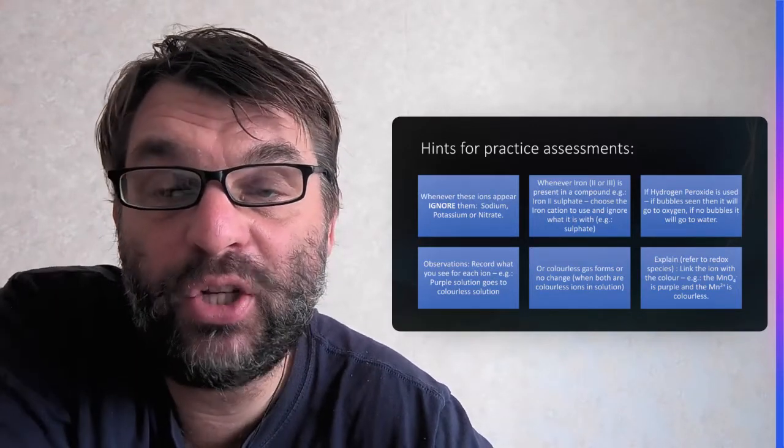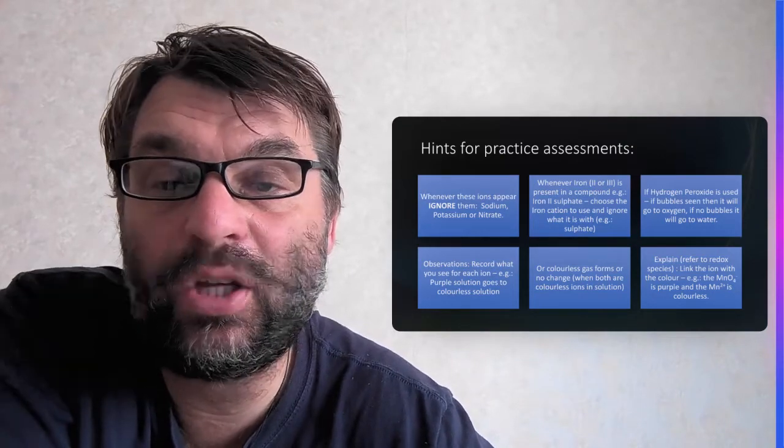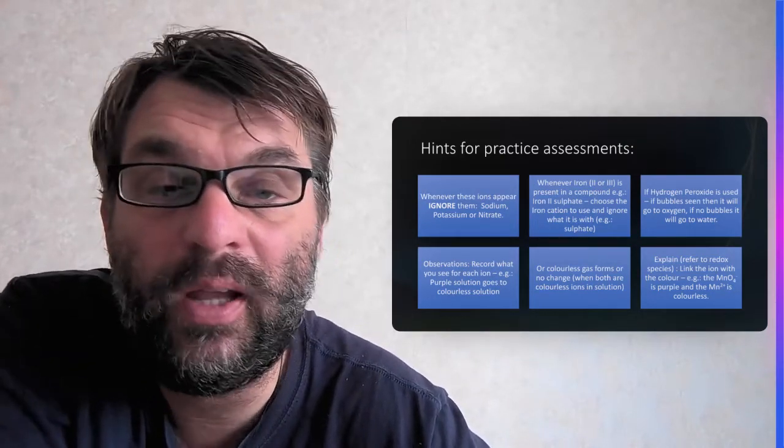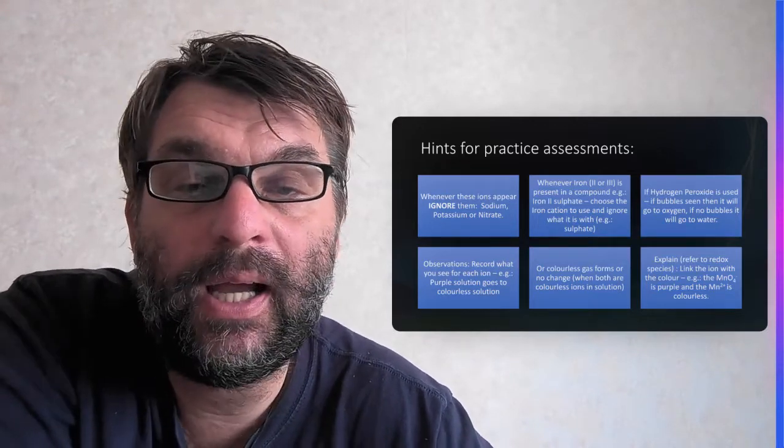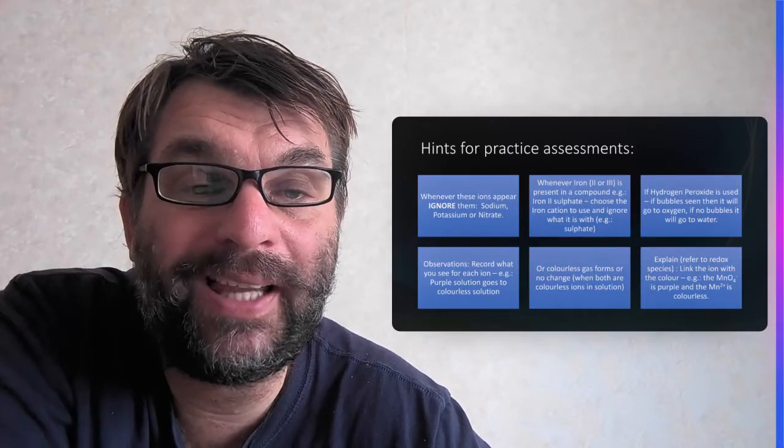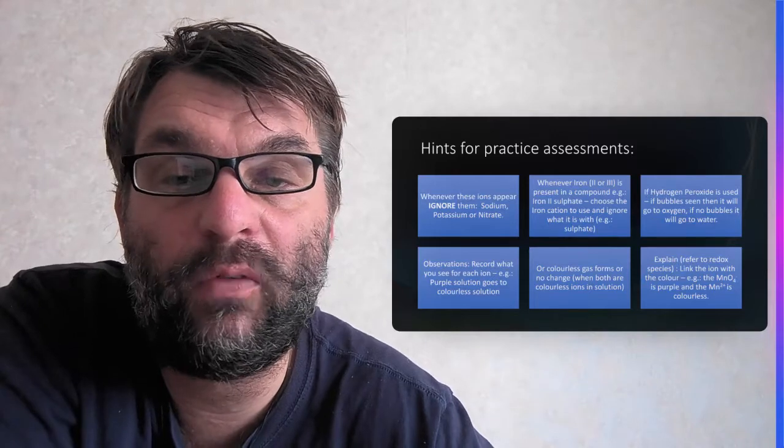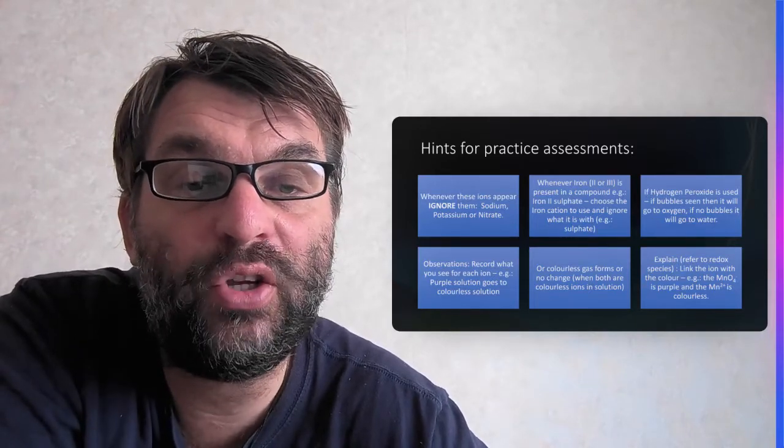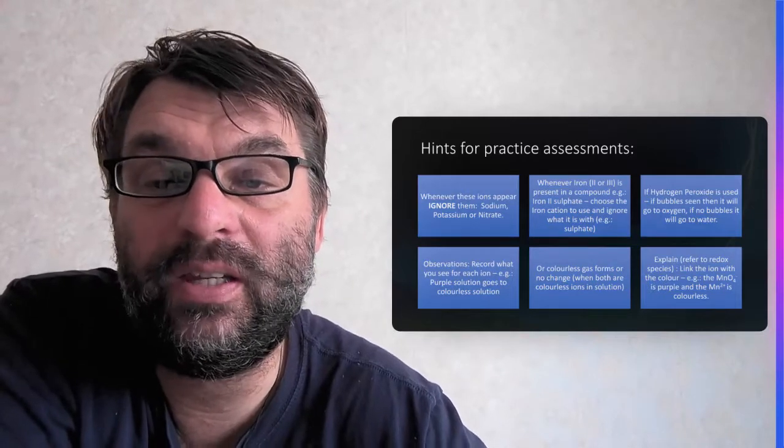You need to have observations recorded, so you need to record what you see for each cation and anion. For example, a purple solution when you're dealing with permanganate going to a colorless solution, the manganese 2+ cation, or a colorless gas forms in the case of hydrogen peroxide, that will be the formation of oxygen, or no changes seen at all when you've got both colorless ions in solution.